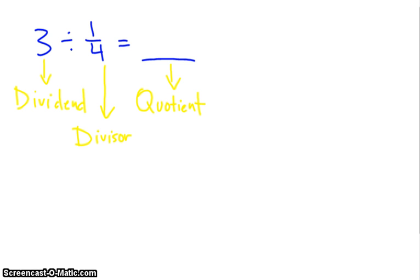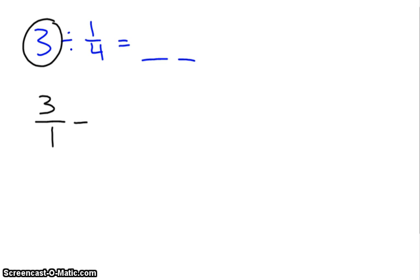Okay, so the first step in solving 3 divided by 1 fourth is going to go like this. First I'll erase my words under here. So the first thing I'm going to do, I'm going to take this whole number 3 and I'm going to turn it into a fraction by putting it over a 1. So I get 3 over 1 divided by 1 fourth.